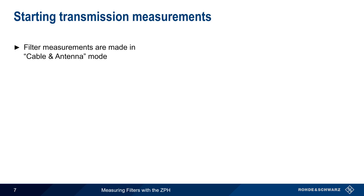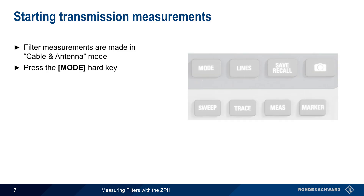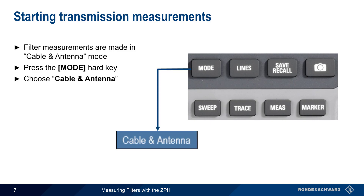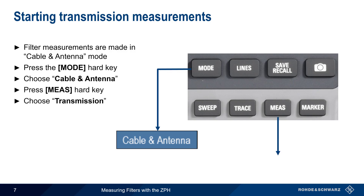On the ZPH, filter transmission measurements are made in Cable and Antenna mode. To enter this mode, press the Mode hard key on the front of the ZPH, and then choose Cable and Antenna from the list of available on-screen options. Next, press the Measure hard key and select Transmission to perform filter transmission measurements.